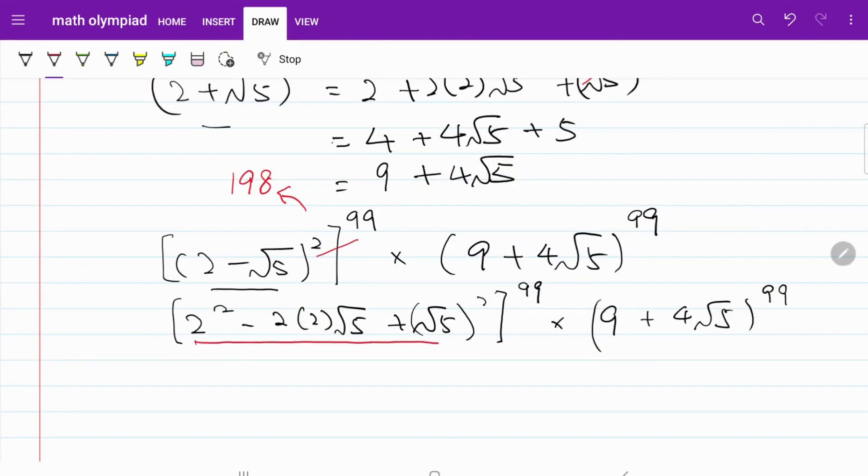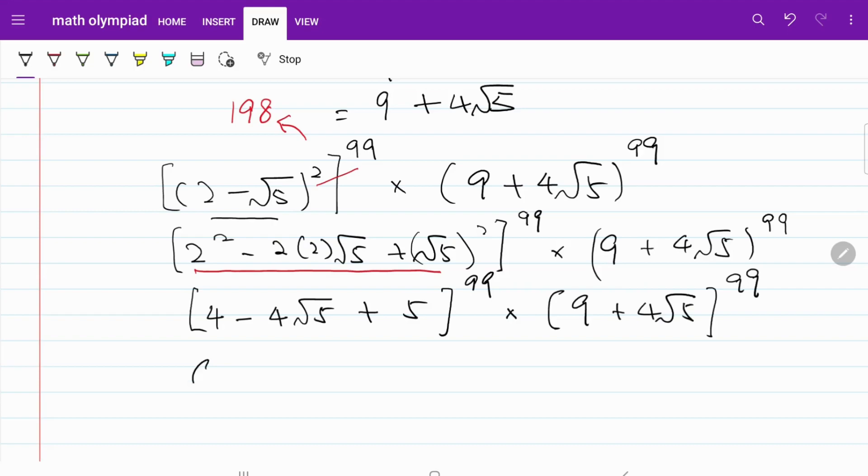Let's simplify this part right here. So what we get is 4 minus 4 square root of 5 plus 5 to the power of 99 multiplied by 9 plus 4 square root of 5 to the power of 99.